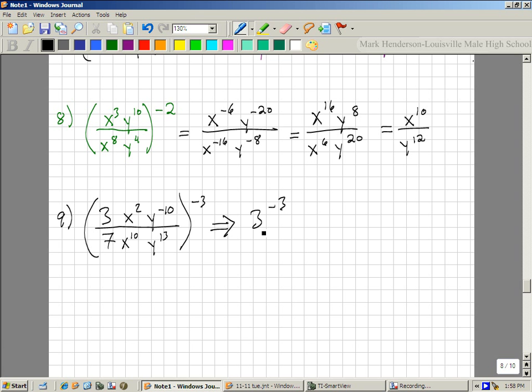Alright, but we're not going to do it like that. Here's how we're going to do it. So, we're going to do 3 to the negative 3, 7 to the negative 3, x to the negative 6, x to the negative 30, y to the positive 30, y to the negative 39. Alright, that is going to change itself to 7 to the third, x to the 30 is going to move up here, y to the 30 is going to stay up here, y to the 39 is going to move up there. 3 to the third is going to move down. As is x to the sixth, and from there I'm done.